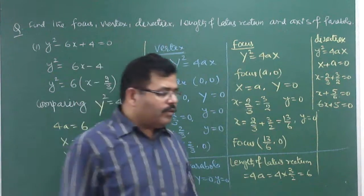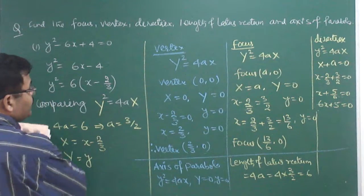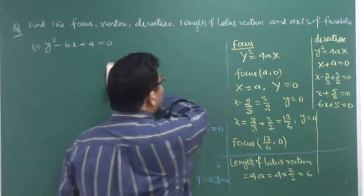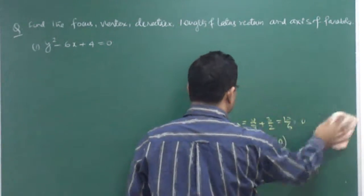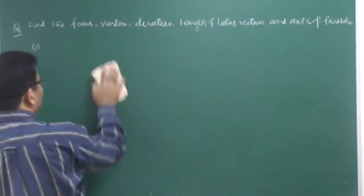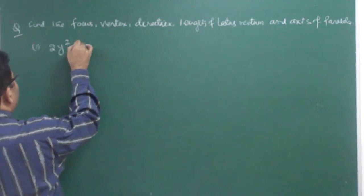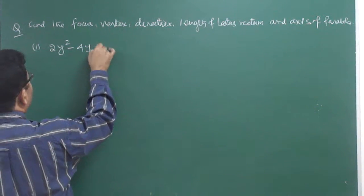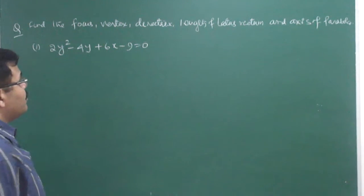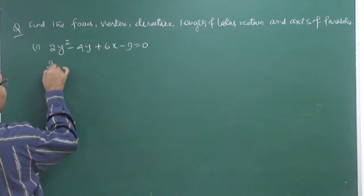I hope you got it. Now the next type of question — let us consider another question just to explain this idea further. The second question is: 2y² - 4y + 6x - 9 = 0. This is the equation of a parabola given. Now find out the vertex, focus, directrix, axis, and latus rectum.